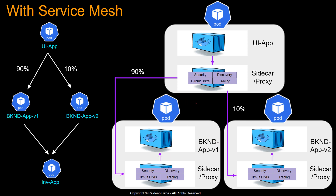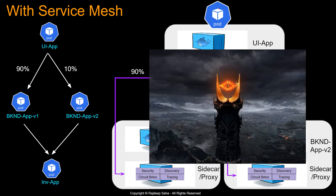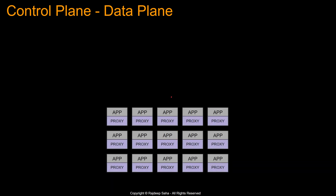This dedicated sidecar infrastructure layer for handling service-to-service communication is called service mesh. There's a lot of configuration involved, and something needs to tell all the sidecars running alongside your application containers what to do. Service mesh is divided into control plane and data plane. The data plane consists of all the proxies deployed with your application containers — these proxies mediate and control all network communication between microservices.